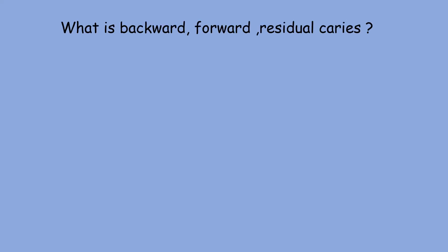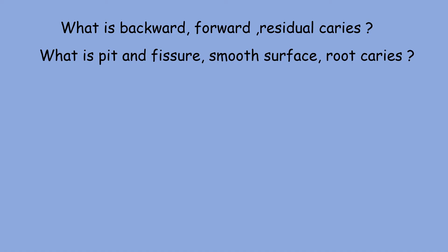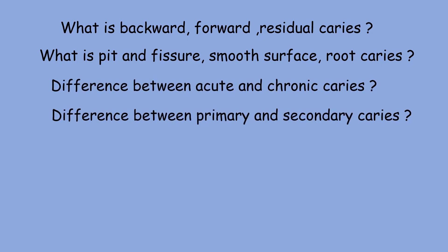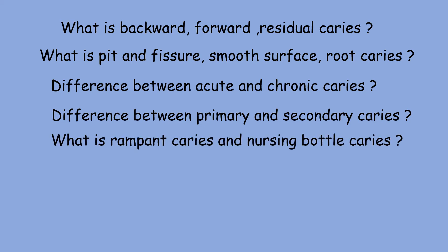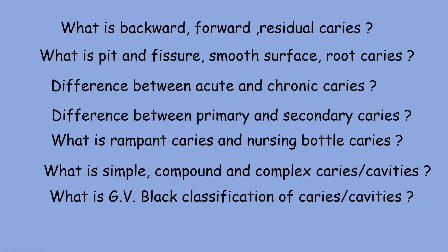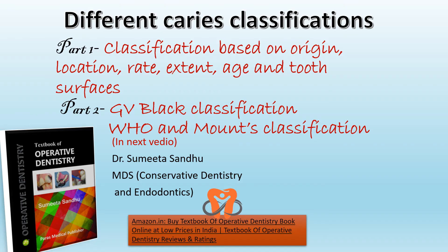Now let's talk about general questions. What is backward, forward, and residual caries? What is pit and fissure, smooth surface, and root caries? The difference between acute and chronic caries? Between primary and secondary caries? What is rampant caries and nursing bottle caries? What is simple, compound, and complex cavity preparation? What is GV Black classification of caries? All these are commonly asked questions. The answers have been discussed in my two videos on different caries classifications — check those out.